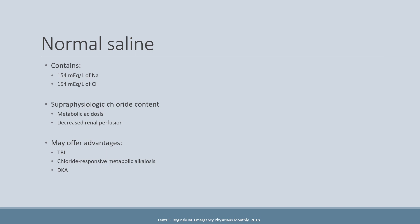Normal saline may offer some advantages, especially for patients at risk for cerebral edema and those with chloride-responsive metabolic alkalosis. In traumatic brain injury, or TBI, the osmolarity and tonicity of the plasma and fluids administered are very important. Normal saline has a theoretical osmolarity of 308 milliosmoles per liter versus LR at 273 milliosmoles per liter, so the hypoosmolarity of LR in TBI could potentially increase the risk of cerebral edema. Similarly, in DKA, plasma hyperosmolarity and a rapid decrease in osmolarity could place patients at risk for cerebral edema, so offering a hyperosmolar solution such as normal saline may be beneficial.